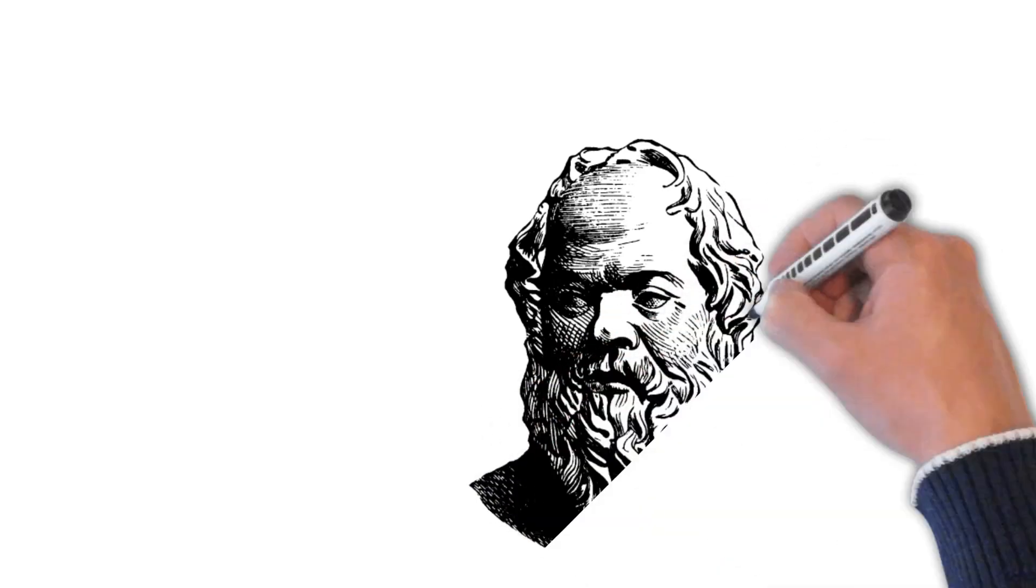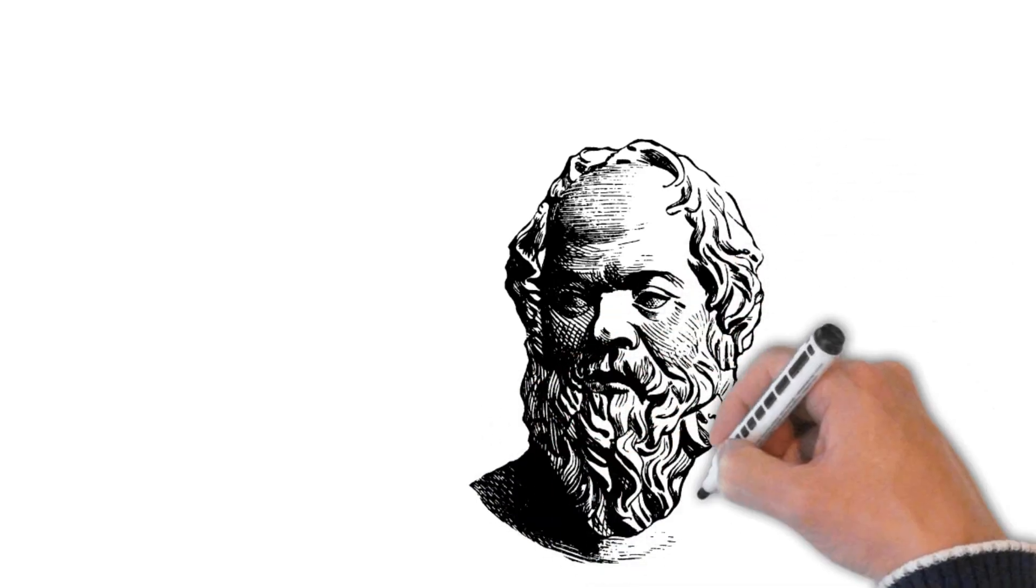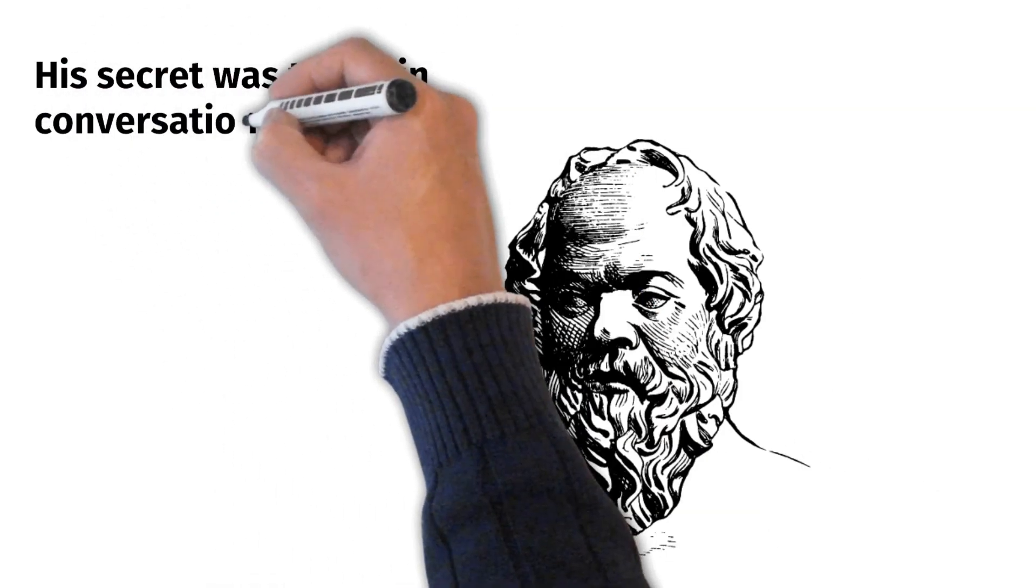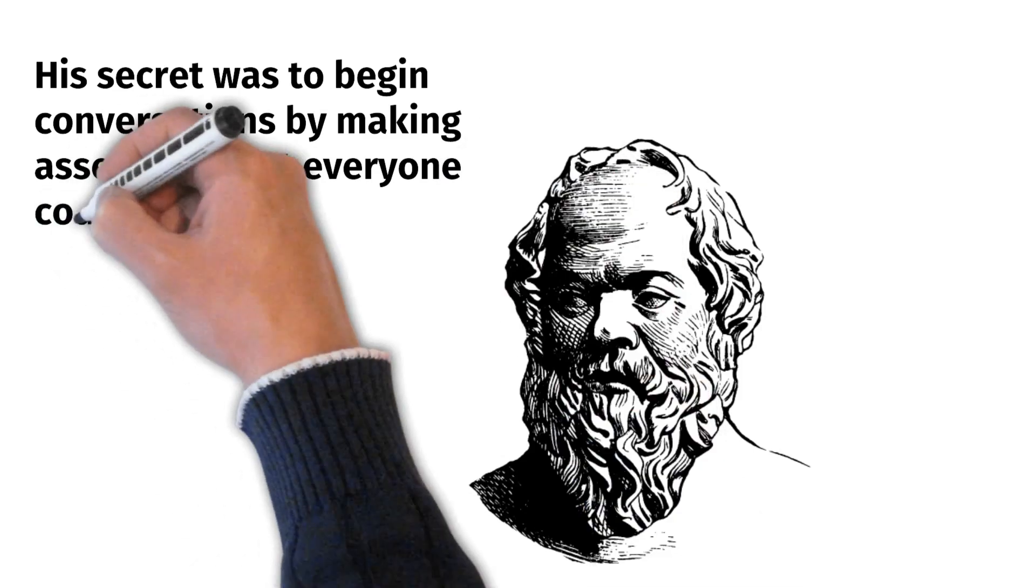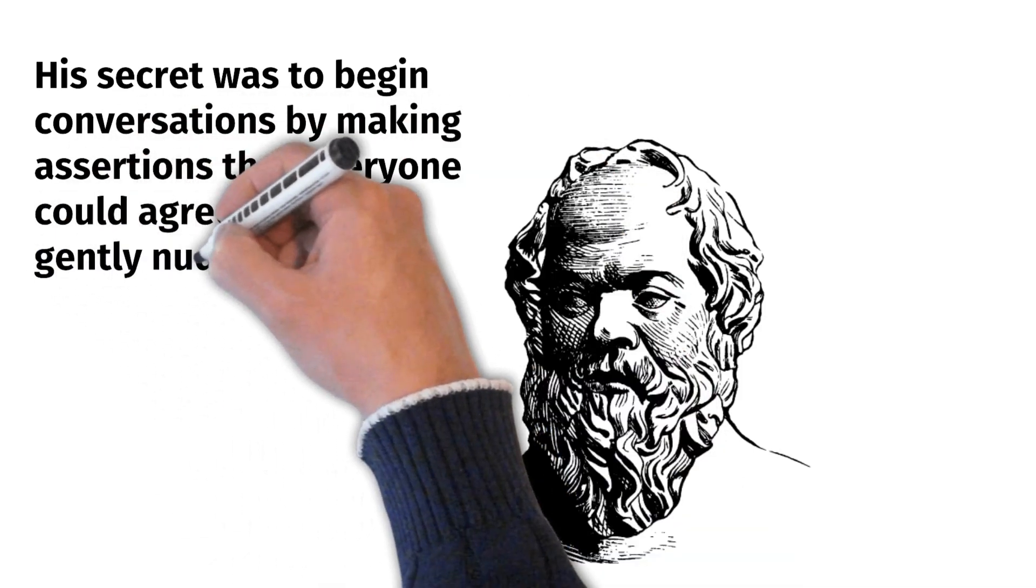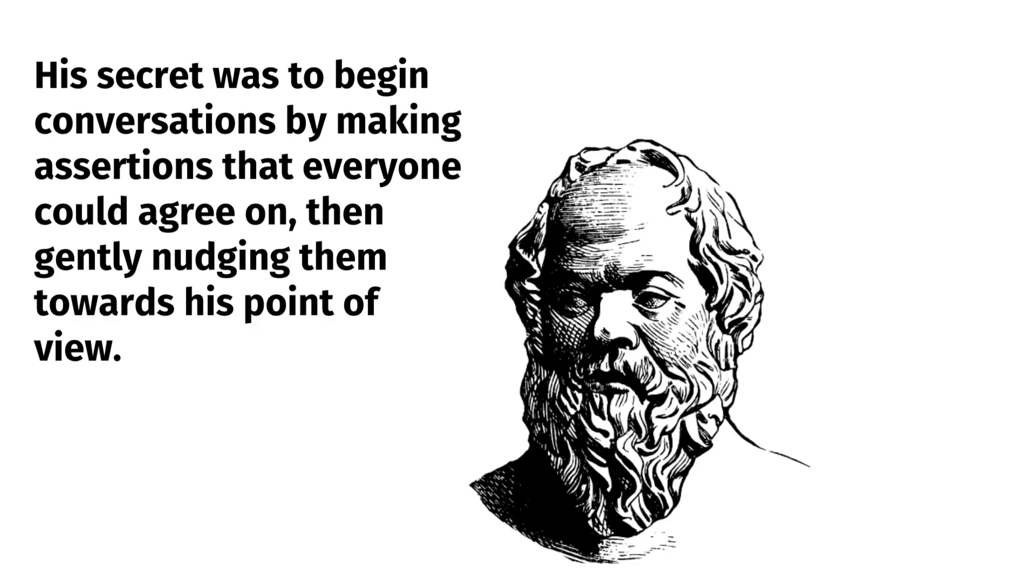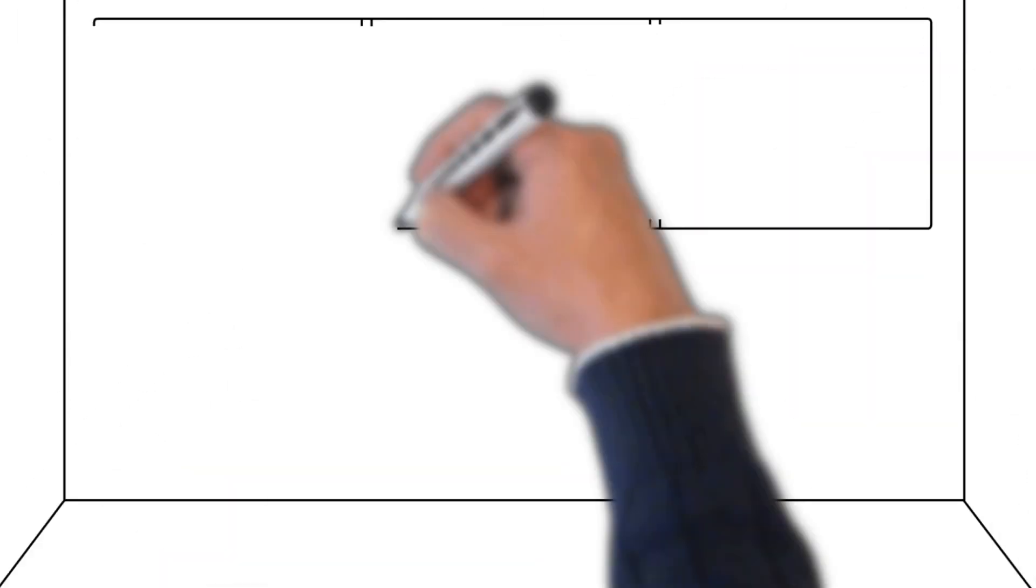His secret was to begin conversations by making assertions that everyone could agree on, then gently nudging them towards his point of view. By getting people in an affirmative state of mind, he was able to convince them of things they had never believed before. The key to successful persuasion is to avoid outright rejection.